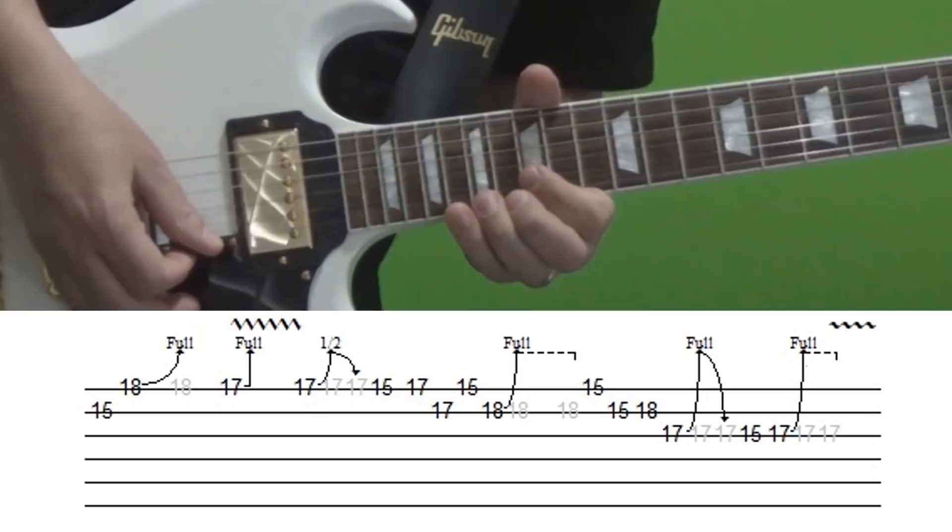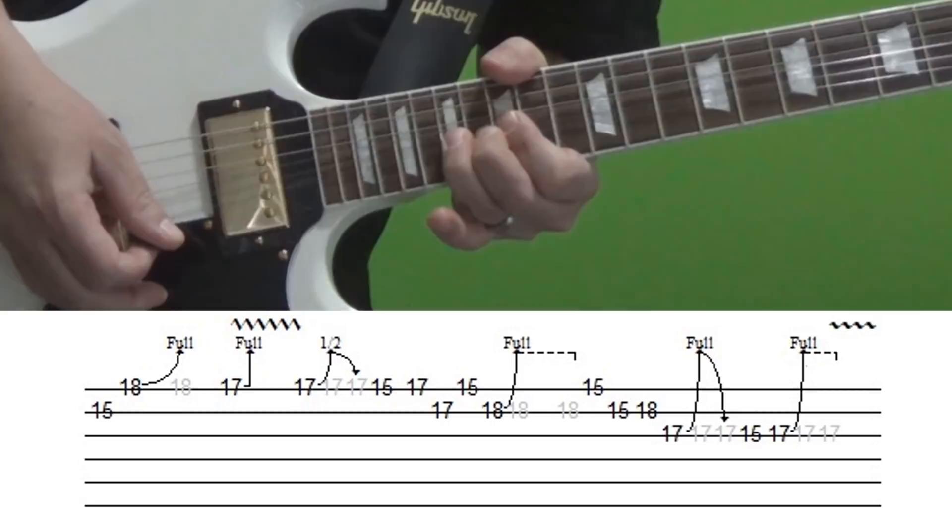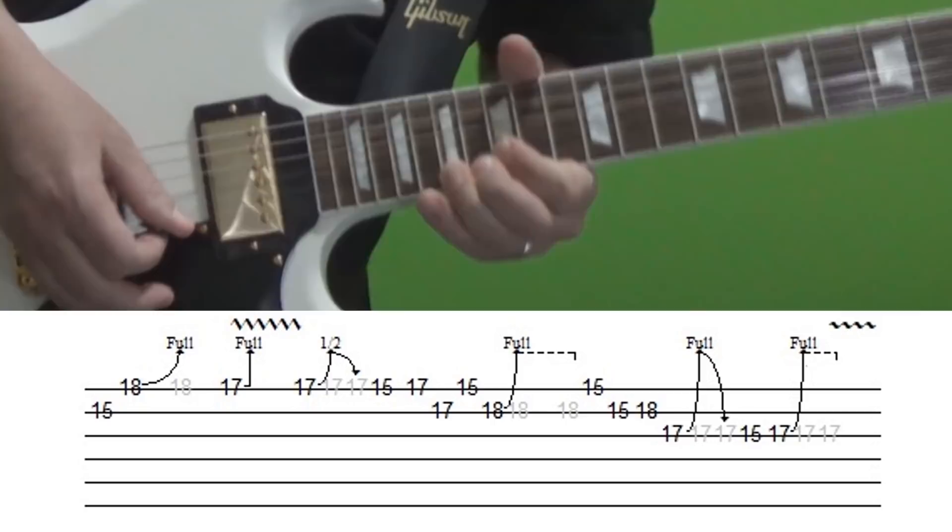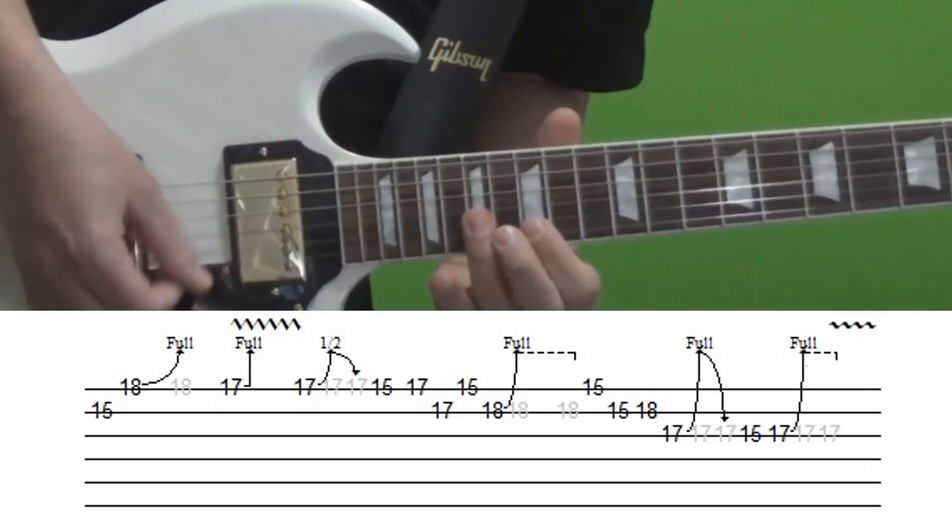And then that seventeenth fret pre-bend, what you're doing is you're basically bending the seventeenth fret of the E up a full step before you pick it, and then pick it and apply vibrato.